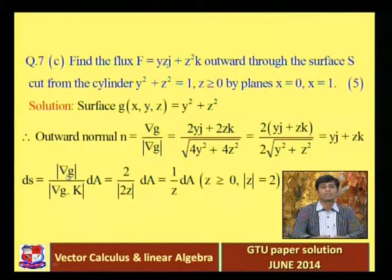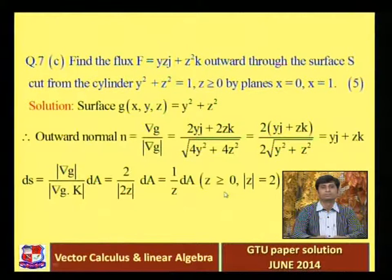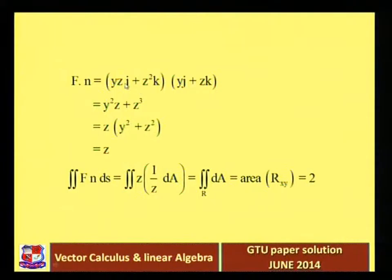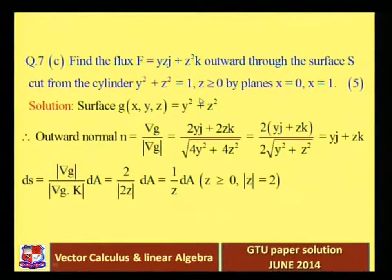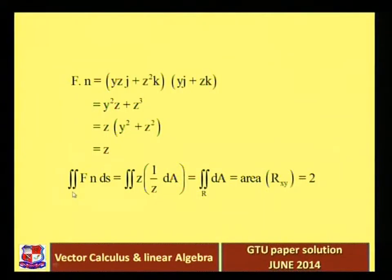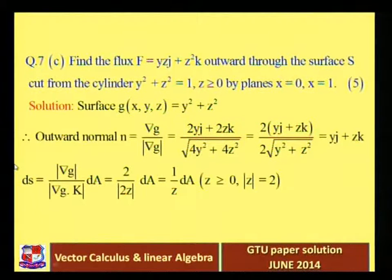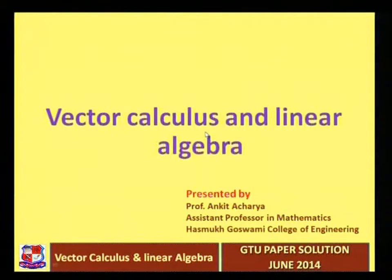ds = (|grad g| / |grad g · k|) dA = (2)/(2z) dA = (1/z) dA. Then F · n = (yz j + z²k) · (yj + zk) = y²z + z³ = z(y² + z²). Since y² + z² = 1, this equals z. So the double integral of F · n dS = the double integral of z · (1/z) dA = the double integral of dA = area of R = 2.